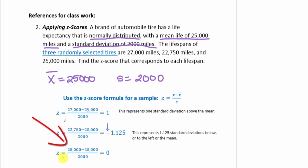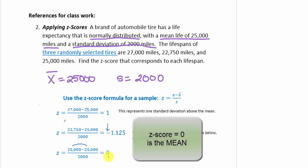Our last example: the life expectancy of the tires is 25,000. So z equals 25,000 minus the mean of 25,000 — that already makes 0 — divided by 2,000. So 0 divided by 2,000 equals 0. A z-score of 0 represents the mean. We are exactly on the mean.